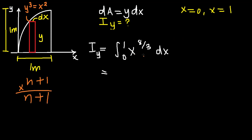x^(n+1) over (n+1). So in this case, it's going to be 8/3 plus 1. So what is that? 8/3 plus 1, that's 11/3. And then it's going to be divided by 11/3 again. Just put it in brackets, 11/3 all over 11/3.